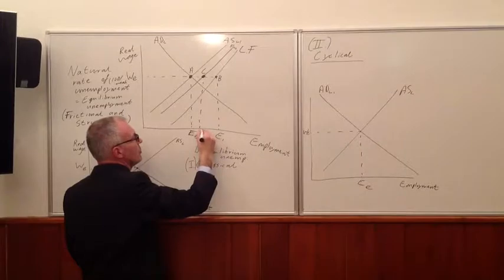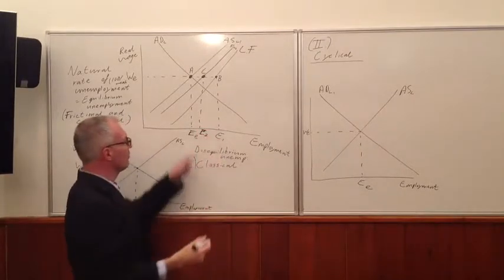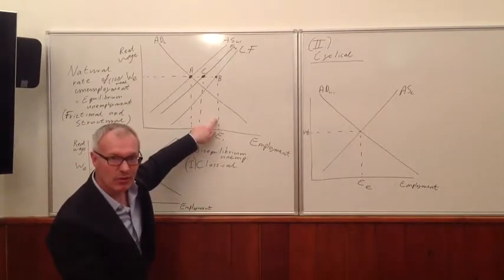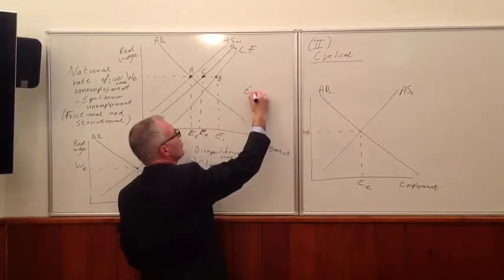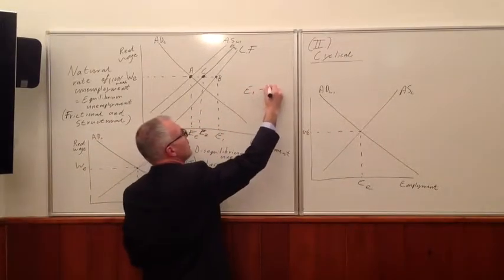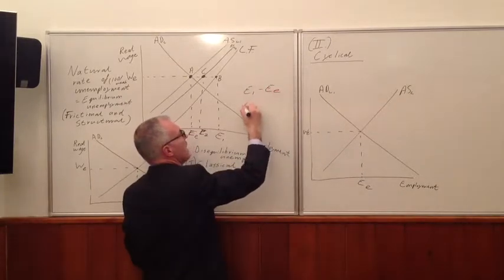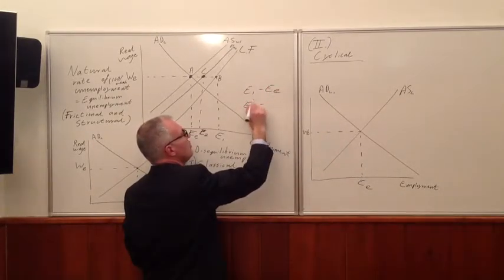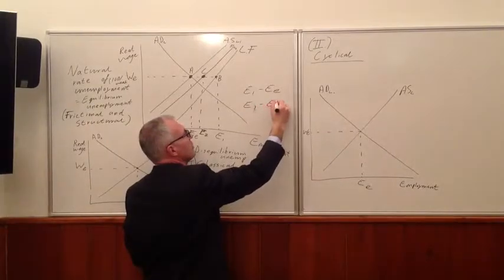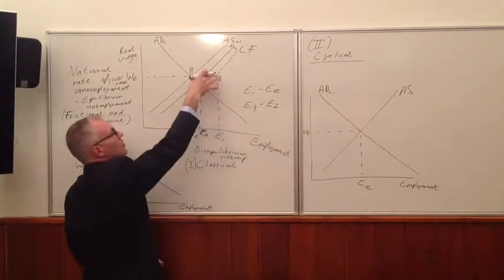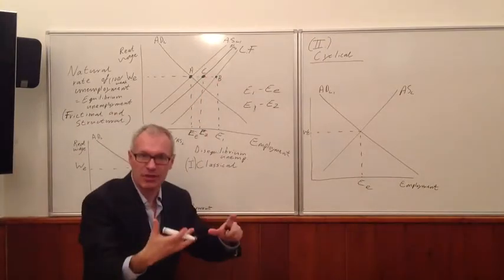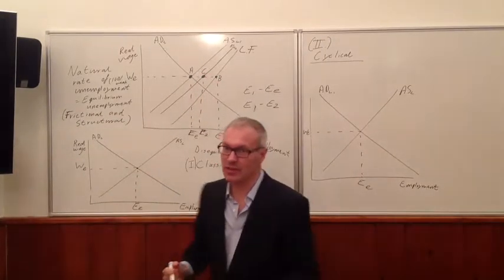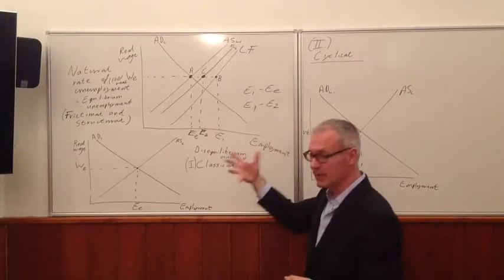And look what's happened. We now have a reduction in the level of the natural rate unemployment. Before it was E1 minus E-E, and now it's E1 minus E2. So it's reduced from A to B to C to B as a result of supply-side policies that are operating in the labour market.